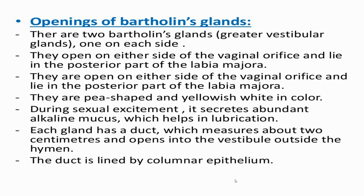The Bartholin glands are two glands, one on each side, that open on either side of the vaginal orifice and lie in the posterior part of the labia majora. They are pea-shaped and yellowish-white in color. During sexual excitement, they secrete abundant alkaline mucus which helps in lubrication. Each gland has a duct measuring about two centimeters that opens into the vestibule outside the hymen, and this duct is lined by columnar epithelium.